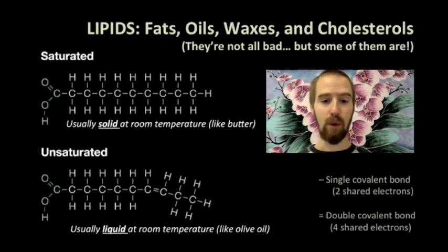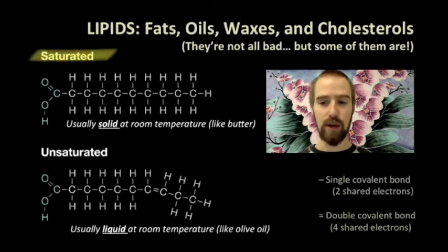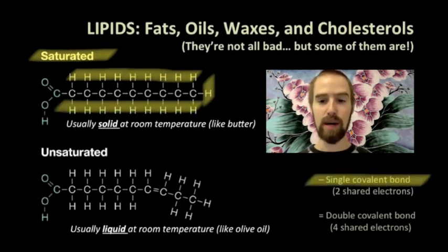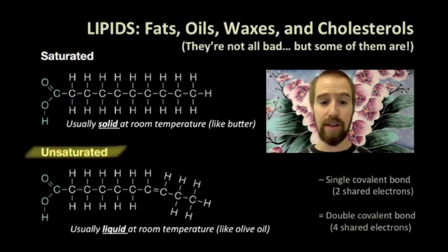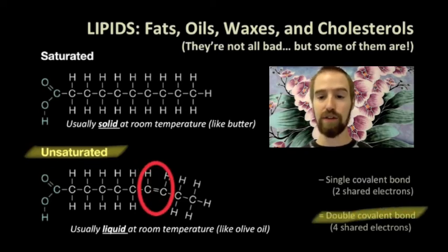Although lipids serve many important functions, some are better for us than others. Such is the case with saturated and unsaturated fats. Saturated fats are called saturated because they have as many hydrogen atoms attached to them as possible. That's because every bond in the fatty acid chain is a single bond, as you can see here in this picture. Unsaturated fats contain one or more double bonds, and as you can see, this carbon-carbon double bond means this fatty acid has fewer hydrogen atoms attached. It is less than full, therefore it is unsaturated.